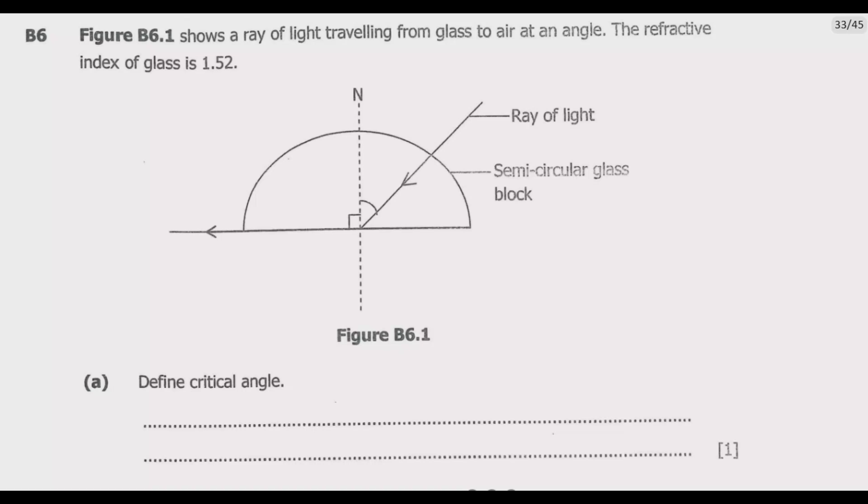Question B6: Figure B6.1 shows a ray of light traveling from glass to air at an angle. The refractive index of glass is 1.52.